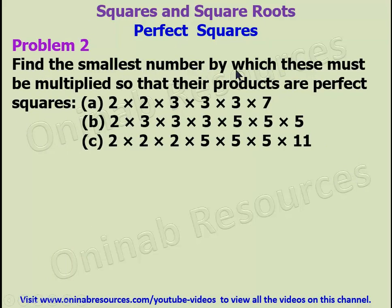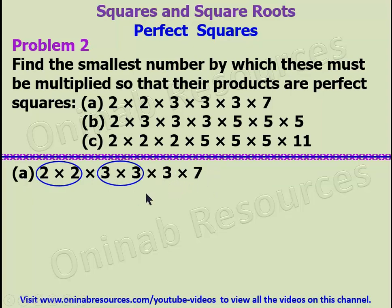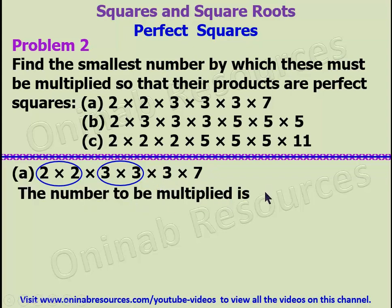For Problem 2, find the smallest number by which these must be multiplied so that their products are perfect squares. Starting with part a: this particular number has already been expressed as a product of prime factors. We group the first two 2s together. Then we have three 3s — we take the first two and the third cannot be grouped. So the number to be multiplied is 3 times 7, which gives 21.